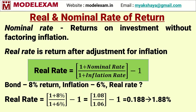Real and nominal rate of return. Nominal rate of return is the returns on investment asset classes like gold, stocks, mutual fund schemes, or bonds. If a mutual fund scheme gives you 13 percentage return, then that is called the nominal rate of return. This is the return without factoring inflation, and real rate of return is the return after adjustment for inflation.